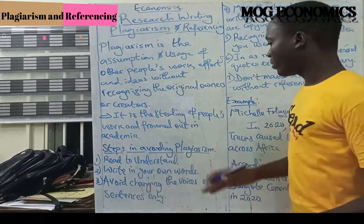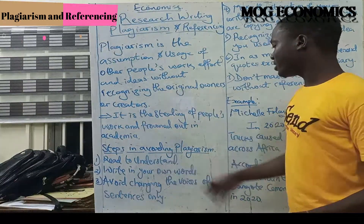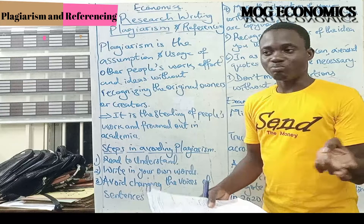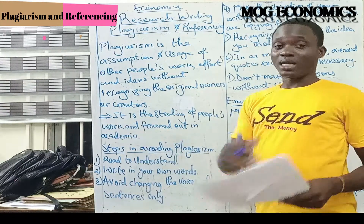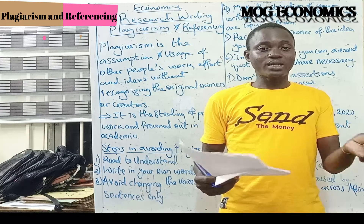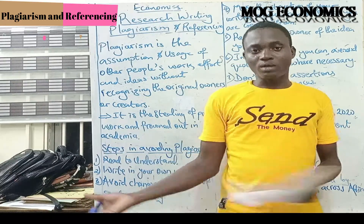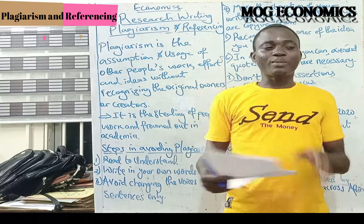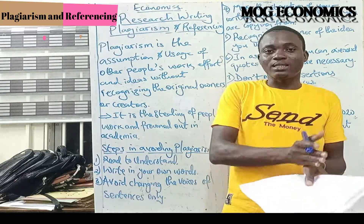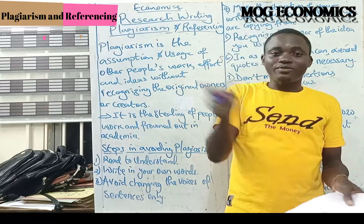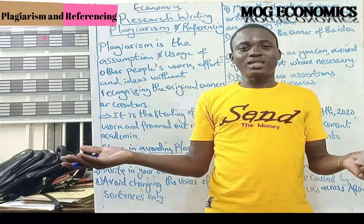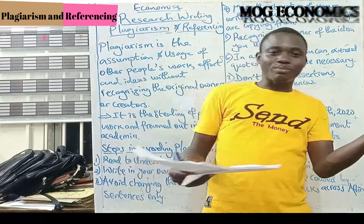Number two: write in your own words. Number three: avoid changing the voice of sentences only. There are two types of voice — active voice and passive voice. Active voice has the subject first, then the verb or predicate, then the object: S-V-O. What some students do is that when they see a sentence they want to write about, they just change the voice. So the active voice S-V-O becomes passive voice O-V-S — they just rearrange the subject and object. That is not paraphrasing.